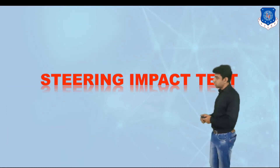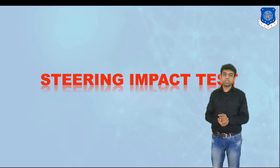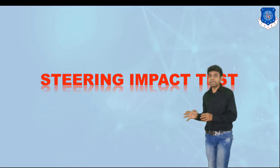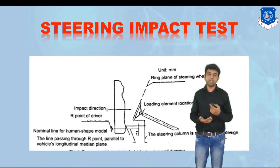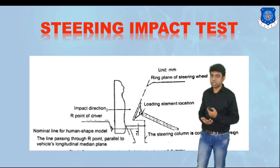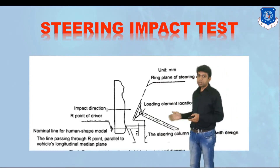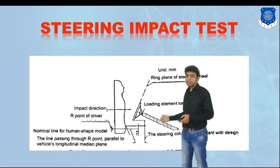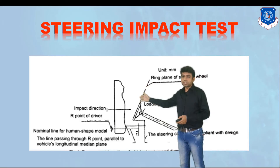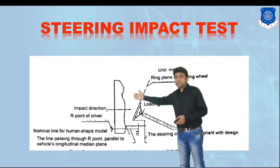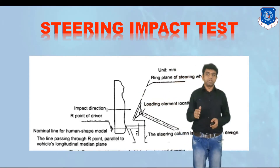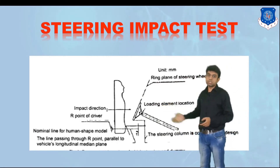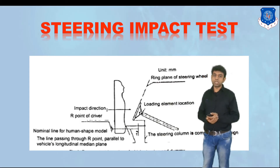Now let us understand the steering impact test. This test is related to the crash category — when a frontal collision happens, it evaluates how much impact the steering has on the chest area. In this test, the steering wheel is placed on the steering rod, a dummy is placed in the seat, and a load sensor is mounted at the chest. An impact is given to the dummy on the steering pad at a certain speed, and we measure how much load is experienced at the chest region.